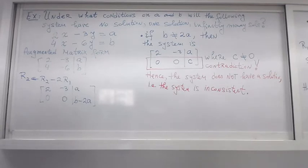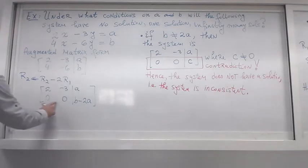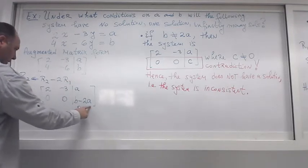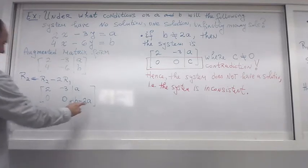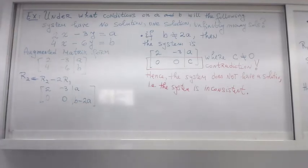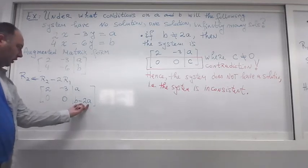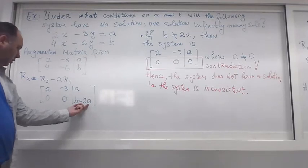So now this immediately sets my sensors on because I have a row of zeros slash something on the other side. So now, depending on what is on the other side, things will develop differently. So if this expression here is different from zero, let's say six, so a and b are such that this expression here, the value is six...